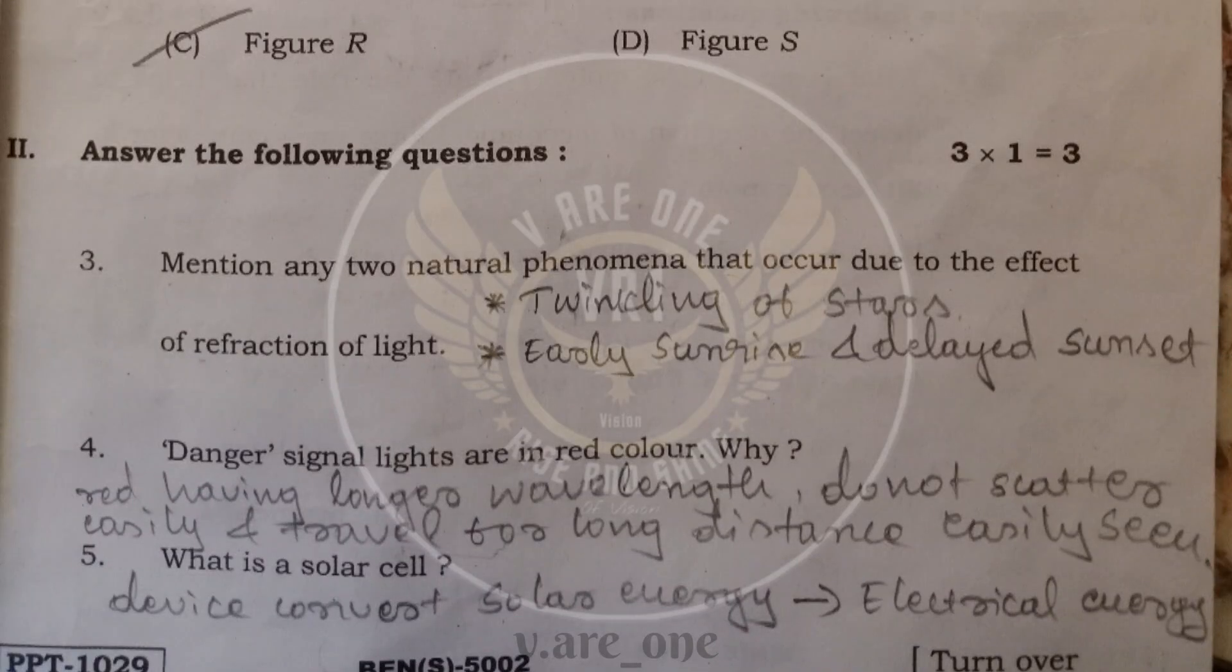Third question, mention any two natural phenomena that occur due to the effect of refraction of light. Answer is first one is twinkling of stars and second one is early sunrise and delayed sunset. Fourth question, dangerous signal lights are in red color. Why? Because red having a longer wavelength and do not scatter easily and travel for the long distance and we can easily see.